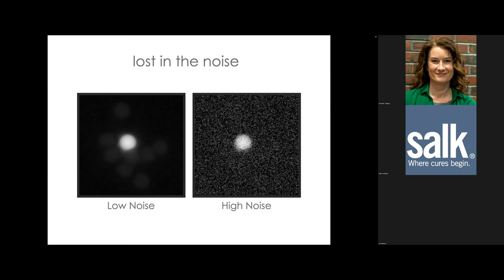Here, two populations of fluorescent beads — one very bright, one much dimmer — illustrate how noise affects detection. The image on the left has a high signal-to-noise ratio and we can see both populations. In the image with lower SNR, the weak-intensity beads are lost in the noise — the variance in intensity due to Poisson noise is greater than the bead intensity itself. This is not a resolution problem; those beads didn't disappear because of the diffraction limit.